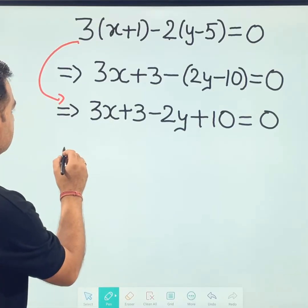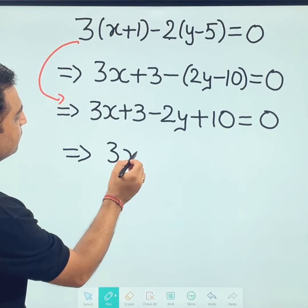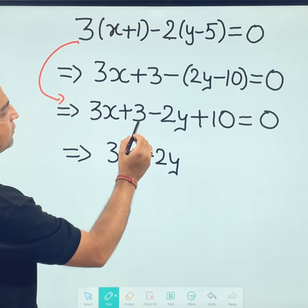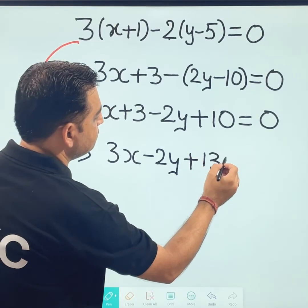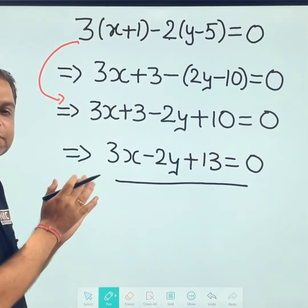Now, 3x, then I am writing minus 2y and then 3 plus 10, 13 is equal to 0. This is what the equation becomes.